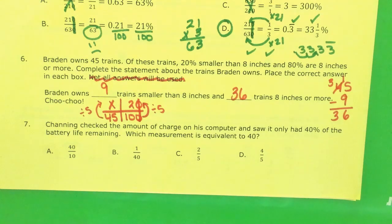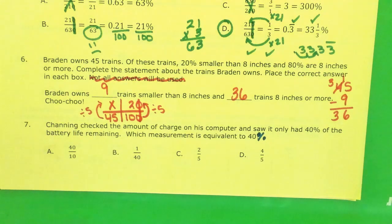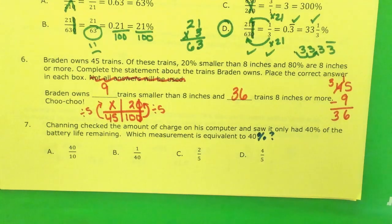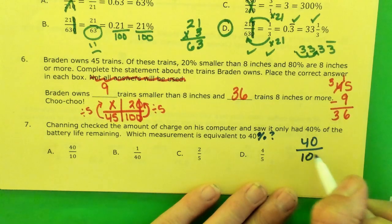Channing checked the amount of charge on his computer and saw it only had 40% of the battery life remaining. Which measurement is equal to 40%? What I know about percents is all percents are out of 100. Not out of 10, A, you're out. 1 out of 40, you're out.